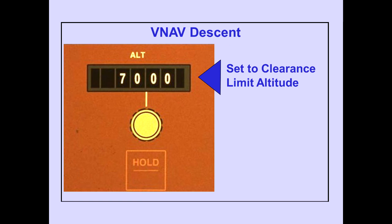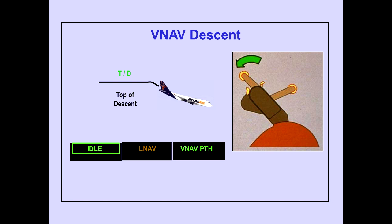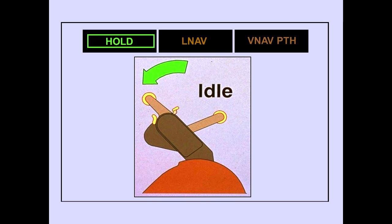To begin VNAV descent, set the MCP altitude to the clearance limit altitude. A VNAV descent automatically begins at the top of descent point. During the descent, the thrust levers retard to idle, and the autopilot pitch maintains the VNAV descent path. Hold is displayed on the PFD when the thrust levers are at idle.